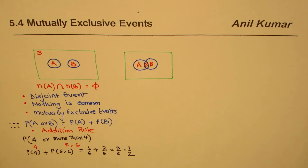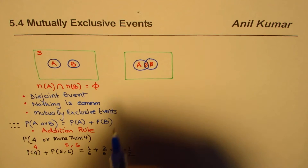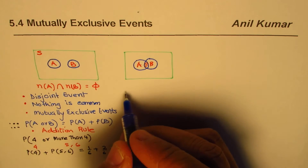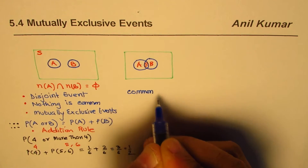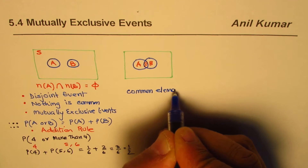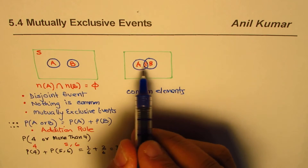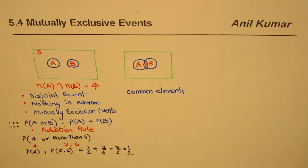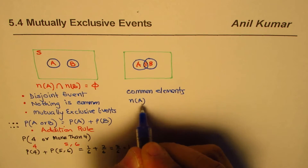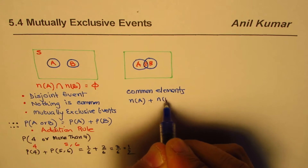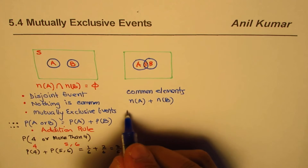Now let's talk about two events which have something in common. If these events happen, they have something in common — they have an intersection or common elements. So these are not disjoint. In that case, the number of elements in A or B requires a different approach.